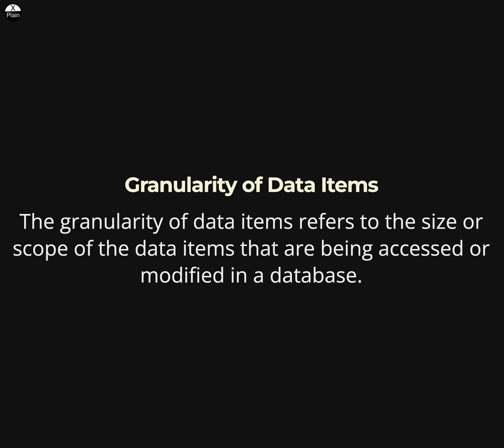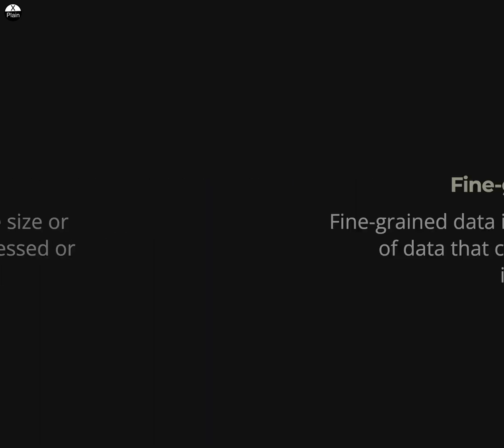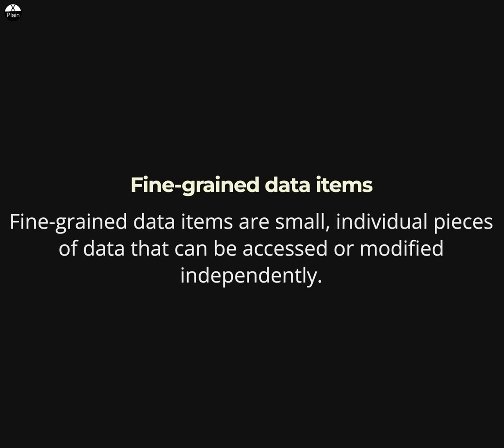Data items can be grouped at different levels of granularity, including fine-grained data items that are small individual pieces of data that can be accessed or modified independently. Examples of fine-grained data items might include a single column in a table or a single attribute of an object.